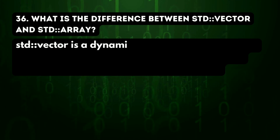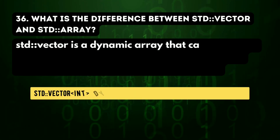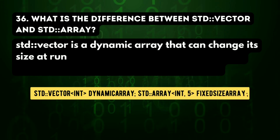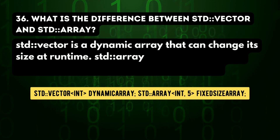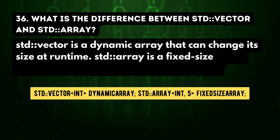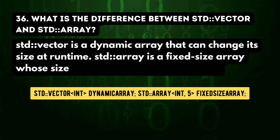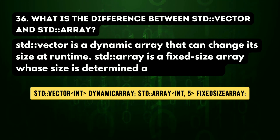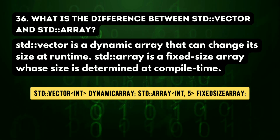36th question: what is the difference between std::vector and std::array? std::vector is a dynamic array that can change its size at runtime. std::array is a fixed-size array whose size is determined at compile time.